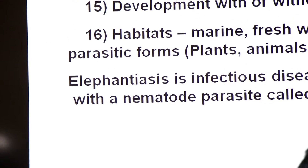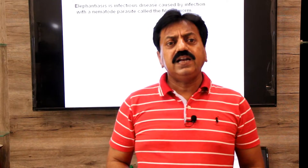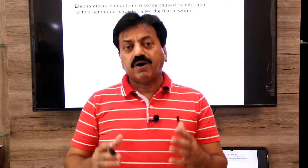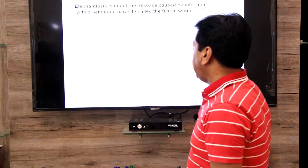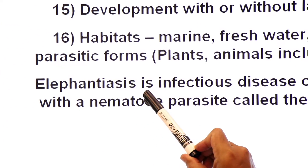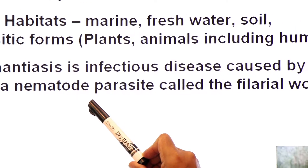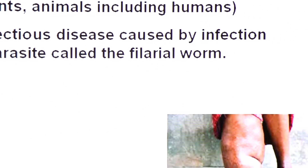One disease mentioned in our textbook caused by a nematode is elephantiasis. Filaria worm causes elephantiasis — hathi paon — where there is massive swelling in the legs. Lymphatic channels become blocked and lymph accumulates, causing the swelling visible in the infected person. This disease is also called lymphatic filariasis, commonly known as elephantiasis.